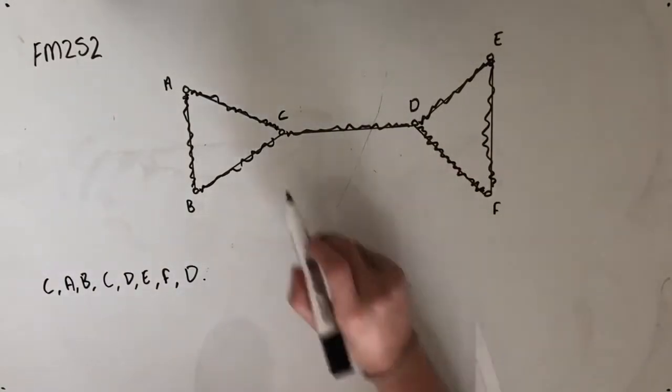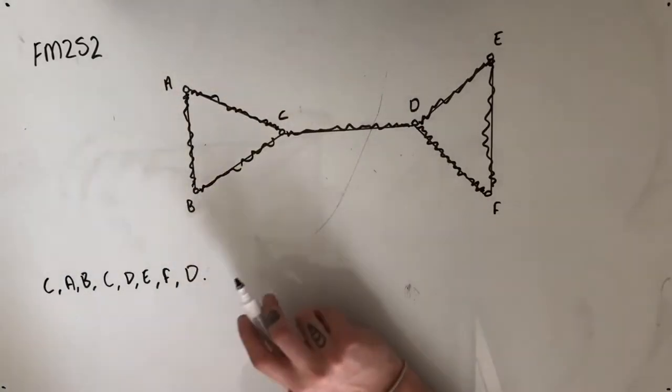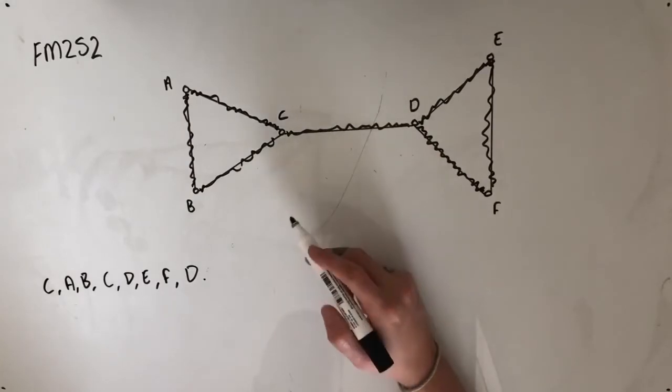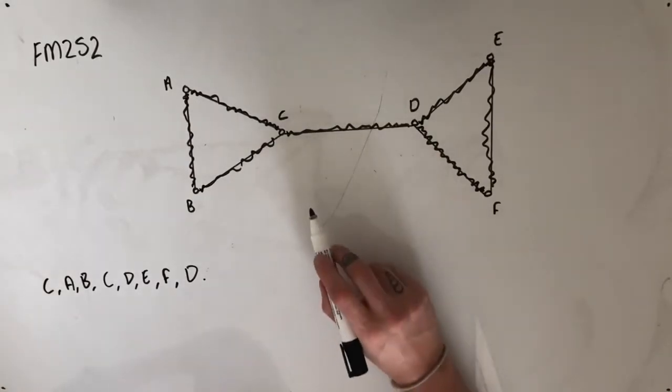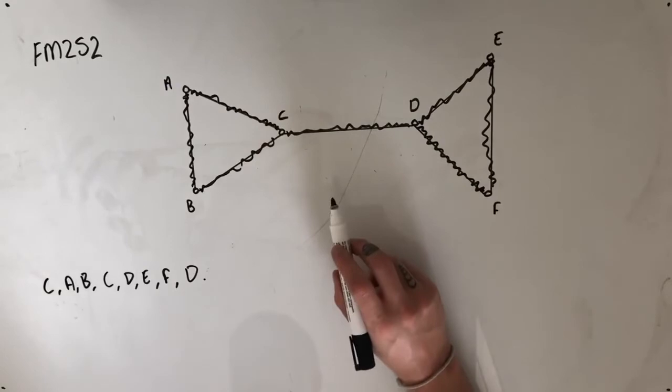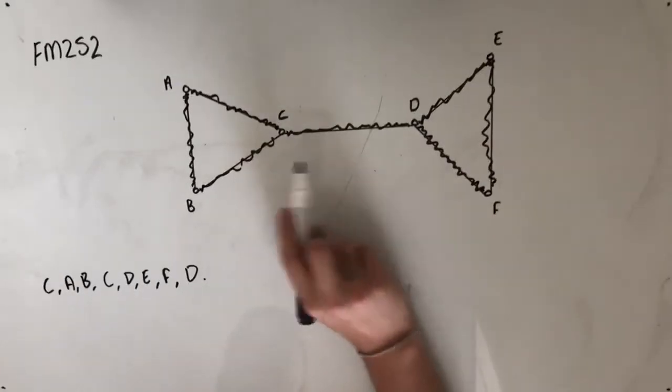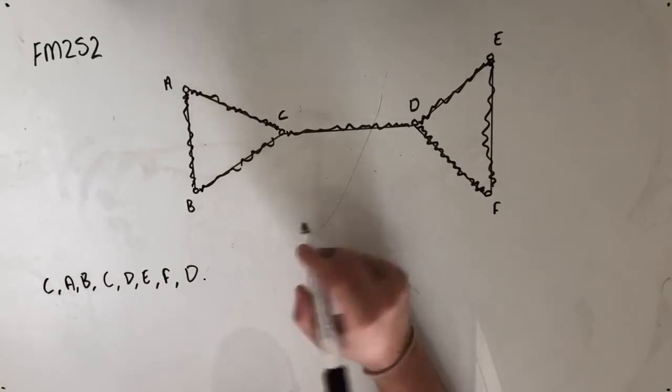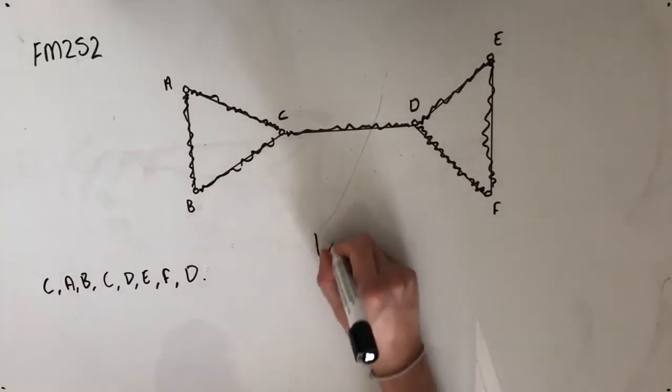So the term for this path, considering that we've used all the edges in our graph only one time—that is, we haven't used any edge more than once—and we started and finished at different points, tells us that we're looking at an Eulerian trail here. So option D.